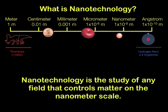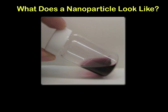Nanotechnology is the study of any field that controls matter on the nanometer scale. However, trying to visualize a nanoparticle is quite difficult. How do you see something which is 5,000 times smaller than the thickness of your hair? For example, the vial shown here contains a solution of gold nanoparticles in water. Notice the red color — very different from the usual color of gold.